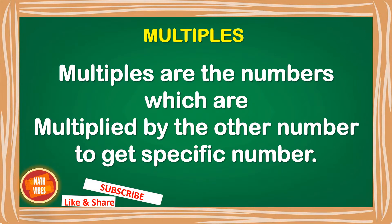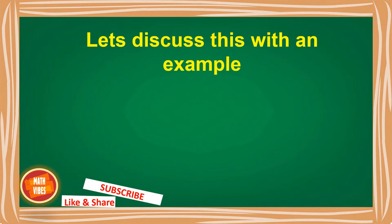So first of all let us understand what multiples are. Multiples are the numbers which are multiplied by another number to get a specific number. It means that when you multiply two numbers, whatever answer you get — the product of two numbers — is called the multiple. So let's see how to find out the multiples.